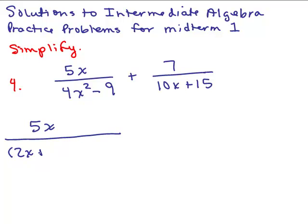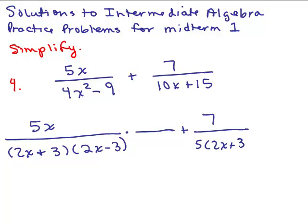2x plus 3 times 2x minus 3, and I'm going to leave a little space here in case I need to multiply the numerator and denominator by something. Plus, I've got 7 over, now if I factor 10x plus 15, I could take out a common factor of 5 and that's 2x plus 3.